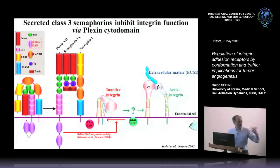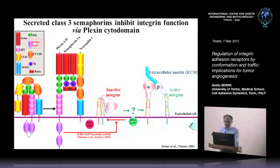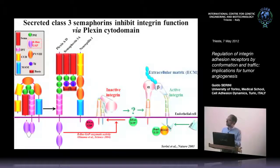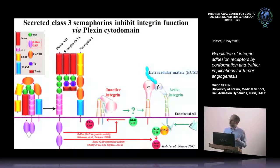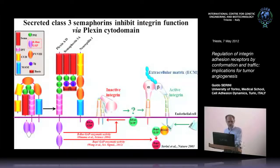Over the years we also learned that another important regulator of integrin function is talin, which binds integrins and activates them. Talin is regulated by another small GTPase, RAP1, which through its effector RIAM1 activates talin. Very recently, Wang and colleagues showed that the cytoplasmic domain of plexin displays a second GAP activity, also on RAP1. So semaphorins through plexin are major regulators of integrin function via GAP activity on both R-RAS and RAP1.